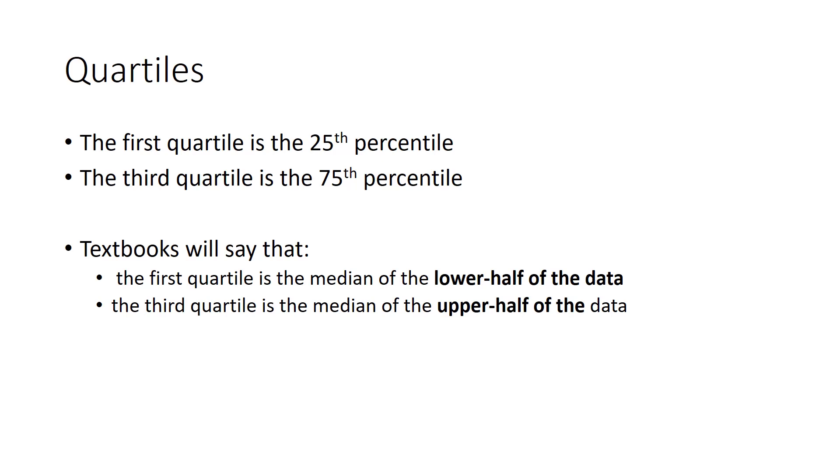People say that the first quartile is the 25th percentile. The third quartile is the 75th percentile, which is to say that the first quartile is a value that's going to cut off the lower 25 percent from the rest of the data. And the third quartile is this cutoff where it cuts off the lower 75 percent of the data, which in principle isn't a big problem. But once you have numbers, it can be unclear about exactly what you want to do. Some textbooks will say that the first quartile is the median of the lower half of the data, and the third quartile is the median of the upper half of the data, which seems okay too.